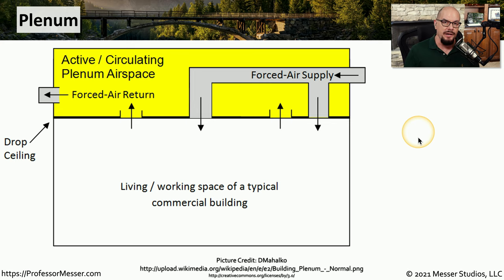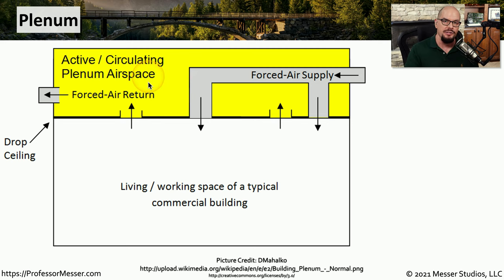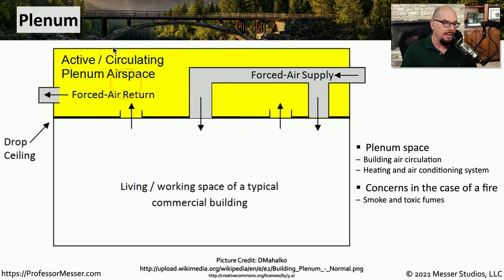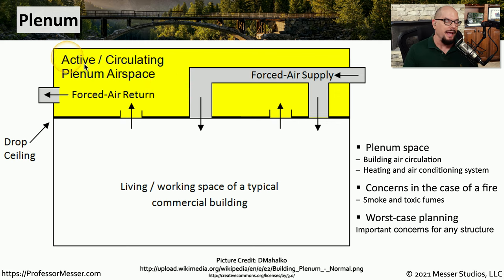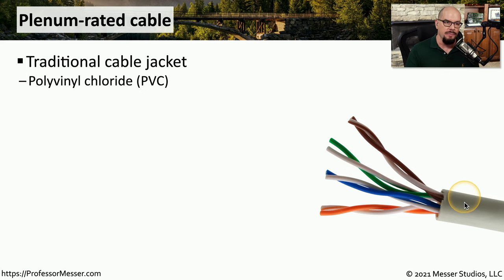If there is a plenum, then there is a shared airspace for all these different components. The forced air return goes into a general area where you might have pipes, network cables, and other infrastructure. If there is a fire, an oxygen source would be in the same airspace as your network cables, so there is a special type of network cable designed for a plenum area. The concern is that if the network cable catches on fire, smoke and toxic fumes could be sent to other parts of the building.